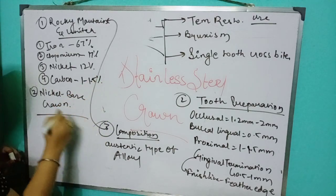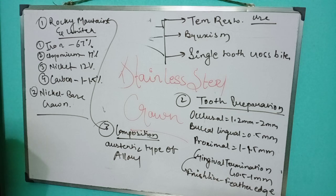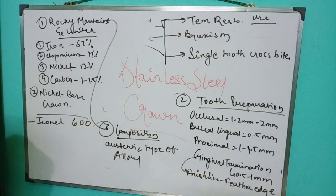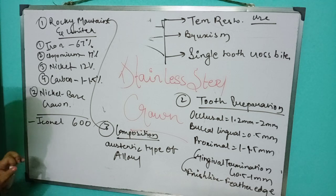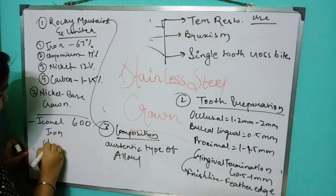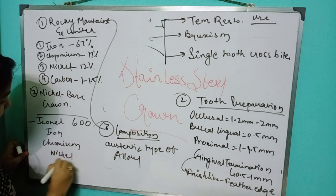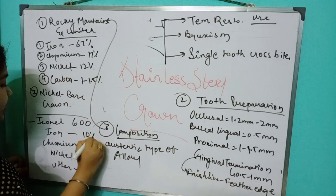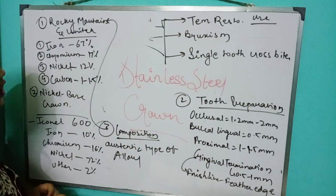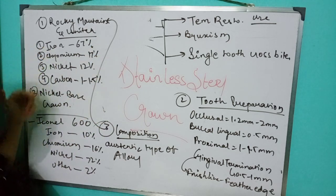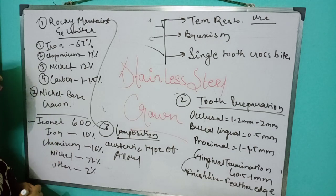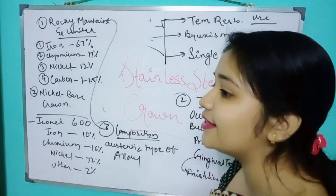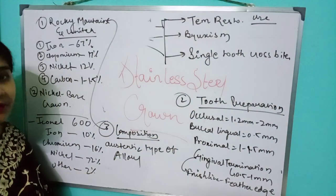The nickel base crown includes Isonyl 600 and micro crowns. Its composition is iron, chromium, nickel, and others — no carbon. The percentages are: Iron — 10%, Chromium — 16%, Nickel — 72%, and others — 2%. Here, unlike Rocky Mountain where iron is maximum, nickel is the maximum at 72%, which is why it is called the nickel base crown.